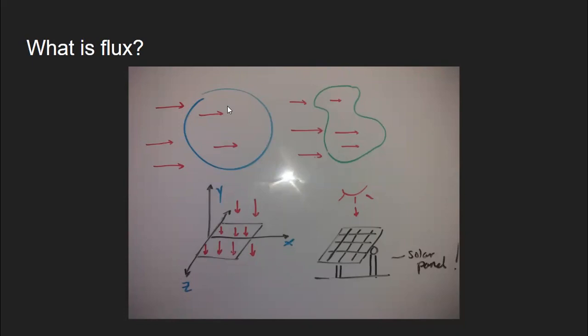In general, flux is the amount of something that passes through a surface. So these arrows are passing through these surfaces. The flux is the amount of arrows passing through the surface, regardless of the surface's shape.